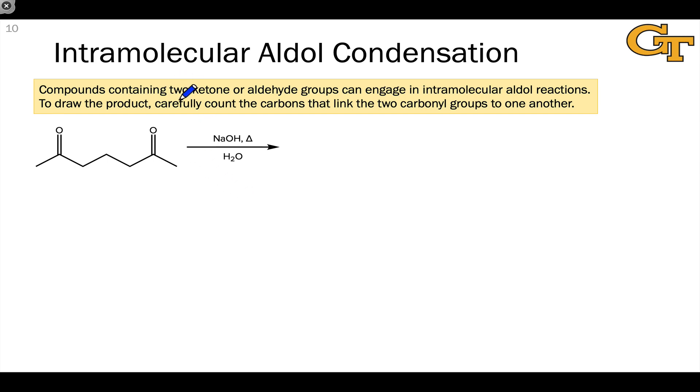We can take a compound that contains two carbonyl groups, two ketone or aldehyde groups, and engage them in an intramolecular aldol reaction. These tend to be selective particularly in cases when we can form a five or six membered ring. These ring sizes are especially stable and these will form preferentially particularly under thermodynamic conditions when we use a relatively weak base like hydroxide or an alkoxide.